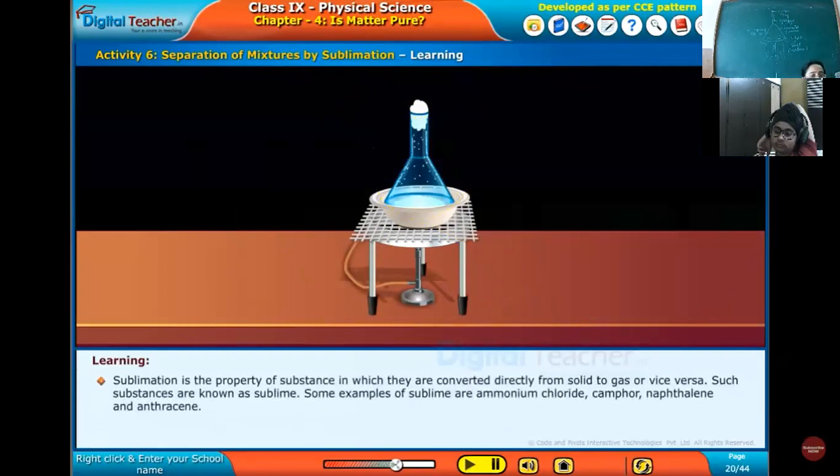We learned that as the ammonium chloride is sublime, after heating it will directly convert into vapor and this vapor will again condense at the upper corner part of the funnel to form solid ammonium chloride. In this way, the mixture of ammonium chloride and chalk powder can be separated by the sublimation method. Sublimation is the property of a substance in which they are converted directly from solid to gas or vice versa. Such substances are known as sublime. Some examples of sublime are ammonium chloride, camphor, naphthalene, and anthracene.